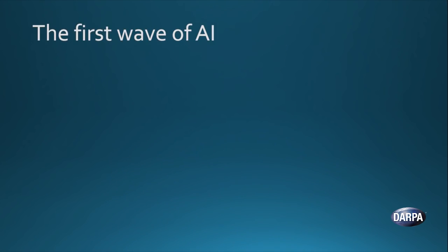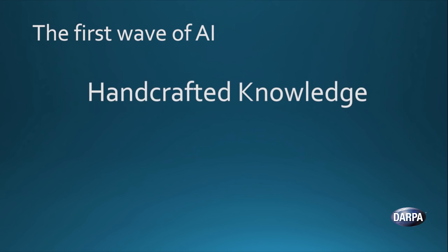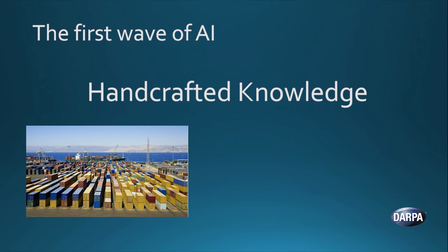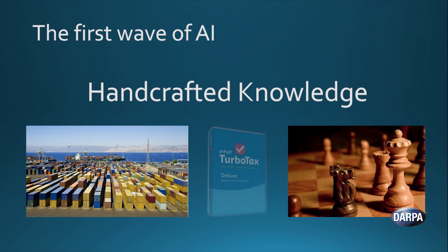I think it's helpful to think about three waves of AI technology. The first wave was handcrafted knowledge. Here experts took knowledge that they had about a particular domain and characterized it in rules that could fit in the computer, and that the computer could study the implications of those rules. Examples of this are logistics programs that do scheduling, game-playing programs like chess, or even TurboTax that you might be using to do your taxes.